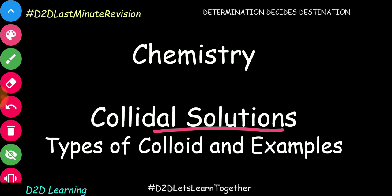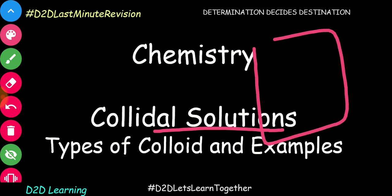There are two key terms: dispersion medium and dispersion phase. The dispersion medium is the larger component — for example, air is called the dispersion medium. Whatever is collected or suspended in it — liquid or solid — will be our dispersion phase. That mixture is our colloidal solution.